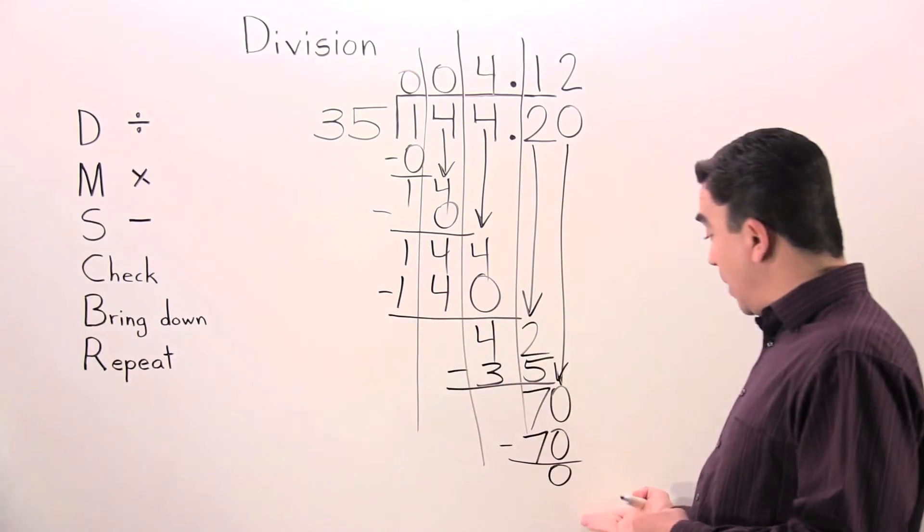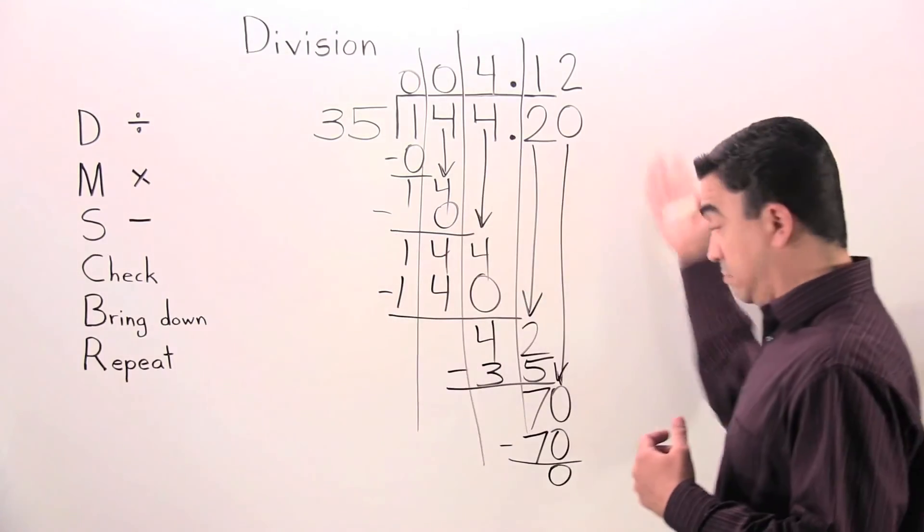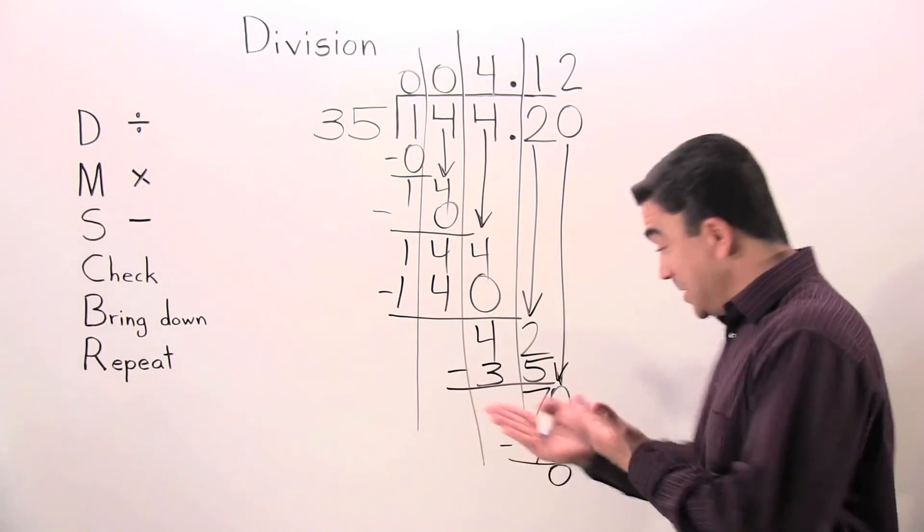Next step: check. 0 is less than 35, keep on going. Next step: bring down. Nothing there. No remainder.